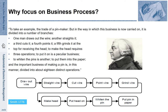'To make the hat requires two or three distinct operations. To put it on is a particular business. To whiten the pins is another. It is even a trade by itself to put them into the paper. And the important business of making a pin is, in this manner, divided into about 18 distinct operations, which in some manufactories are all performed by distinct hands, though in others the same men will sometimes perform two or three of them.'